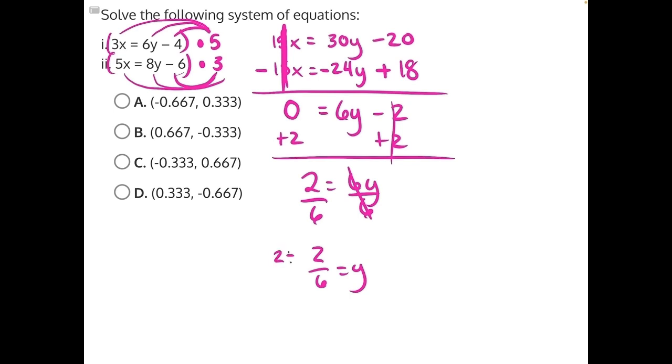Or, in its simplest form, we divide the top and bottom by 2, and we're left with 1 third is equal to y, or the decimal 0.333 repeating.